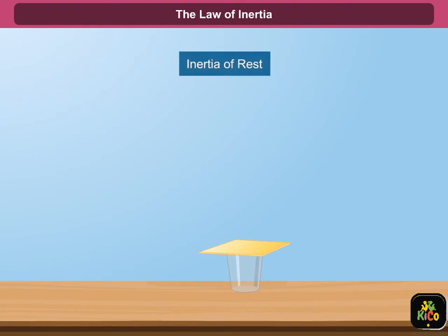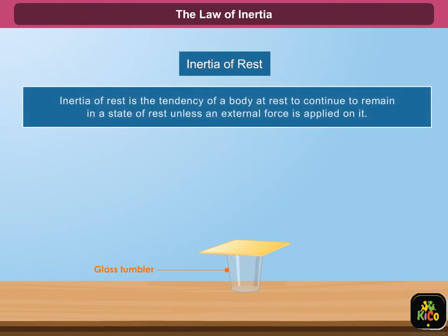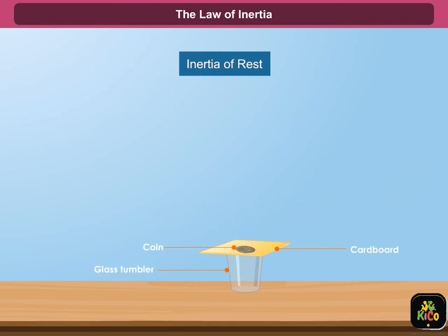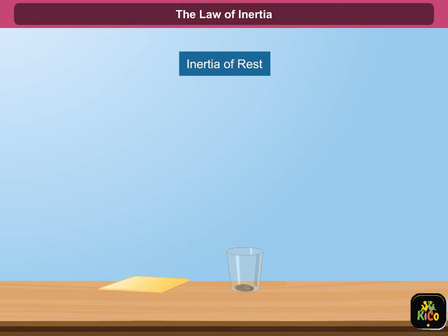First is the inertia of rest. Inertia of rest is the tendency of a body at rest to continue to remain in a state of rest unless an external force is applied on it. To understand this, take a glass tumbler and place a cardboard on it, then place a coin on the cardboard. The tumbler, the cardboard, and the coin are all at rest. Now flip the cardboard — what do you observe?